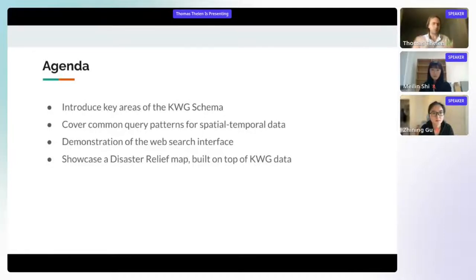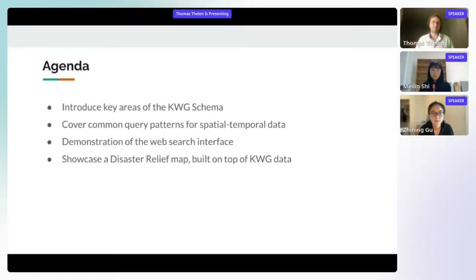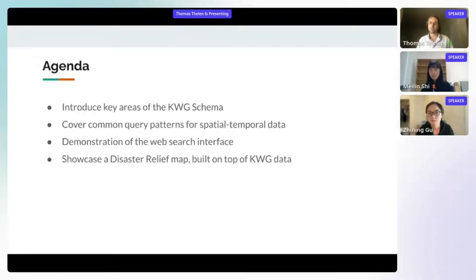The web search interface is a good way to browse the data and see what's relevant. Last, Meilin will showcase a disaster relief map — a Python application built on top of NoWhereGraph that uses data and concepts covered in the previous three topics.